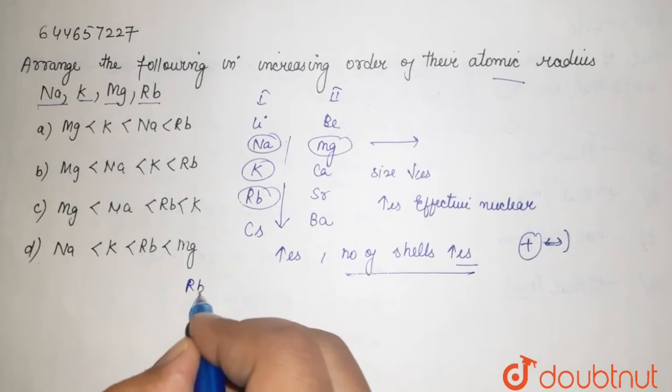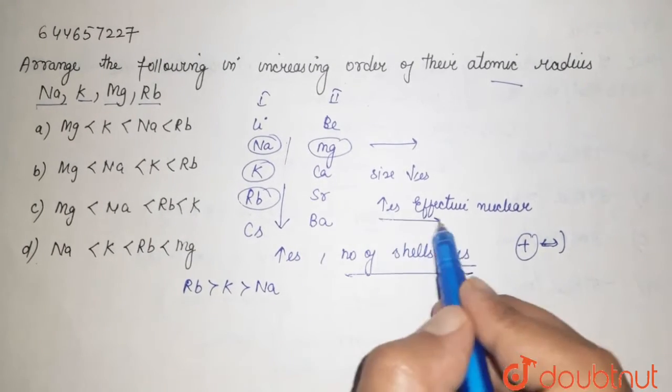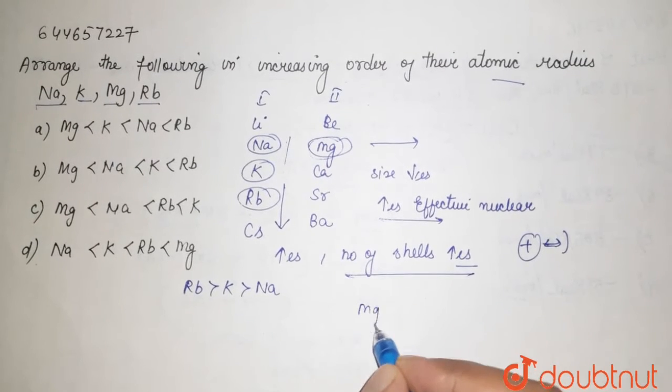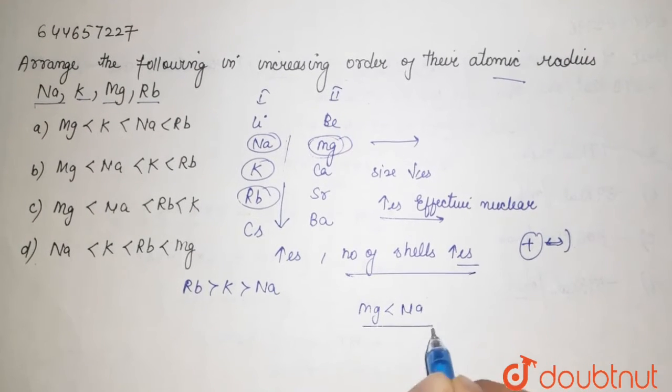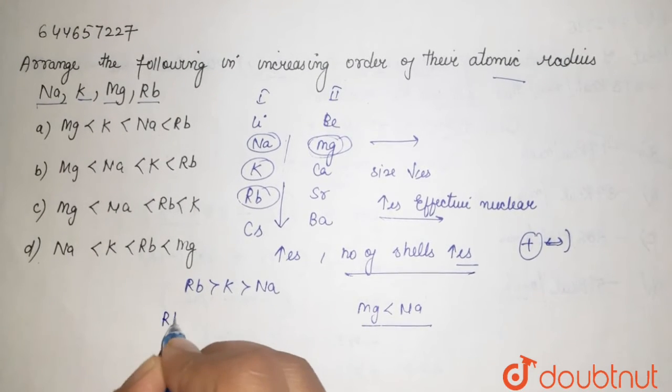Your rubidium has the most size, then your potassium, then your sodium. And moving along the period, your size decreases. It means your magnesium has the least size and sodium has the greater size along your period. So if we arrange these, then we get to know that your rubidium has...